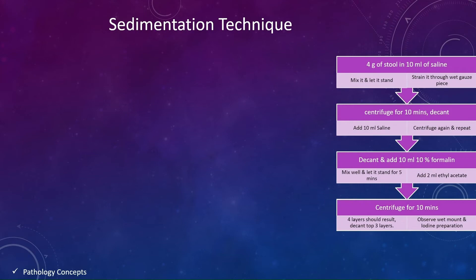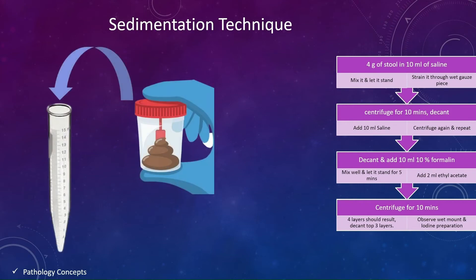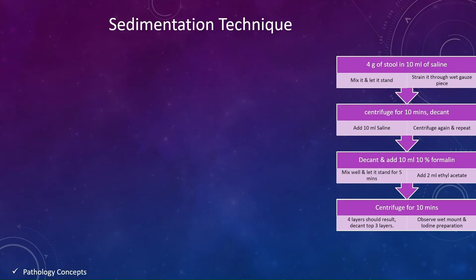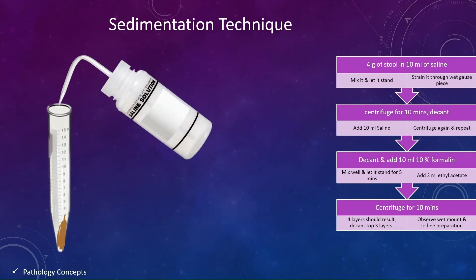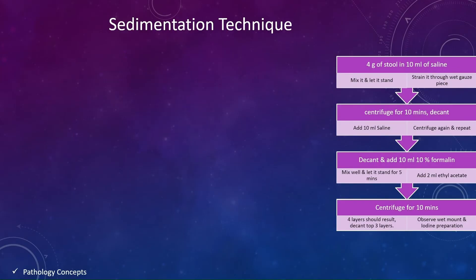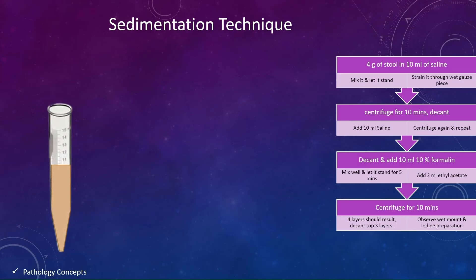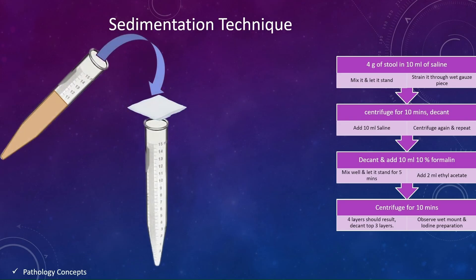Now let's learn the sedimentation technique. Take 4 grams of stool in a conical tube and add 10 ml of saline. Mix it well and let it stand. The next step is to strain it through a wet gauze piece.